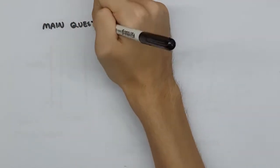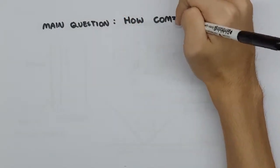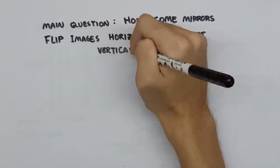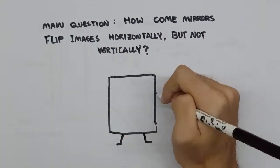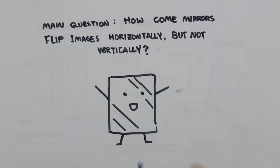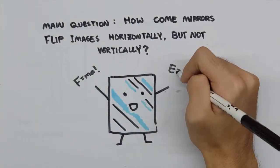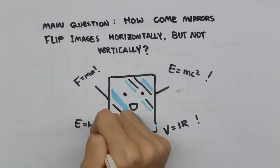So, on to the main question. How come mirrors flip images horizontally, but not vertically? Of course, mirrors aren't sentient objects that actually know what to do. Mirrors simply and objectively obey the laws of physics, as any other object would.